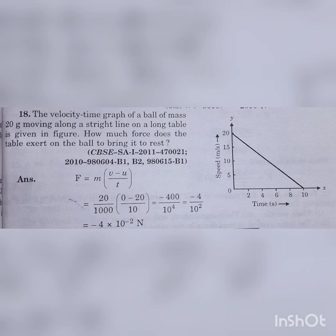Mass must be converted to SI units: 20 g = 20/1000 kg. Using F = M × (V − U) / T: F = (20/1000) × (0 − 20) / 10 = −4/100 = −4 × 10⁻² N. So the force is −4 × 10⁻² N, or equivalently −4/10² N. Both forms are correct.